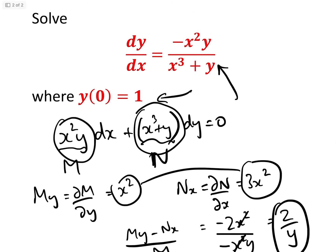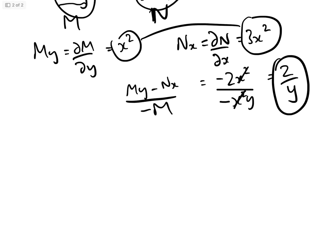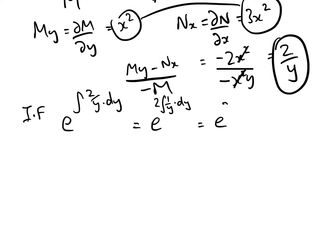And 2/y is a function of y alone. Going back to our formula, if (M_y − N_x)/(−M) is a function of y alone, we use that integrating factor. So the integrating factor we're going to use is e to the power of ∫(2/y) dy. We've seen this a lot in previous videos — in fact, we did a video on the 10 most scary integrating factors, and this one isn't particularly scary. That's e^(2∫(1/y) dy) = e^(2 ln y) = e^(ln y²) = y².